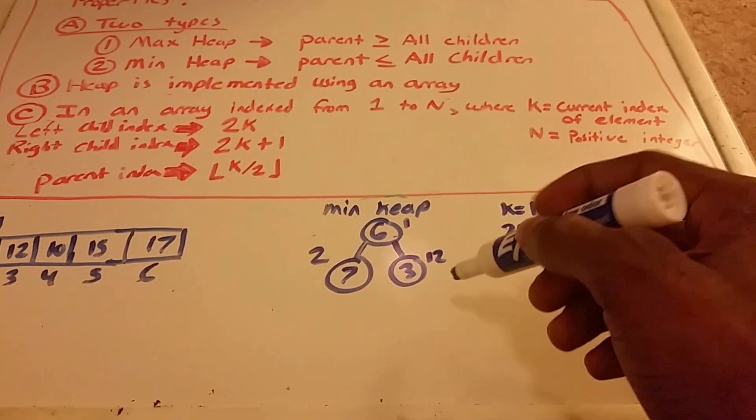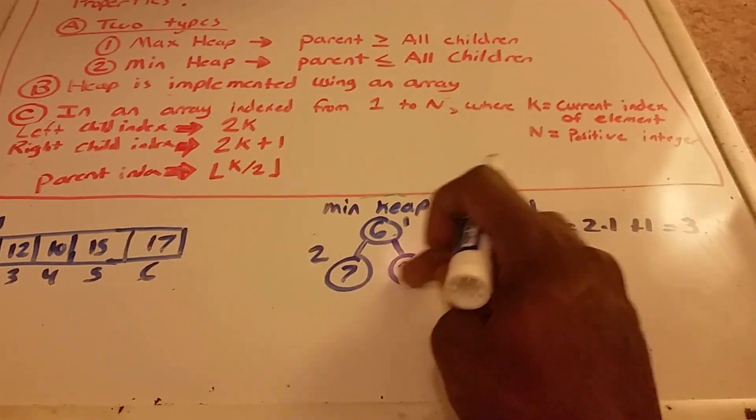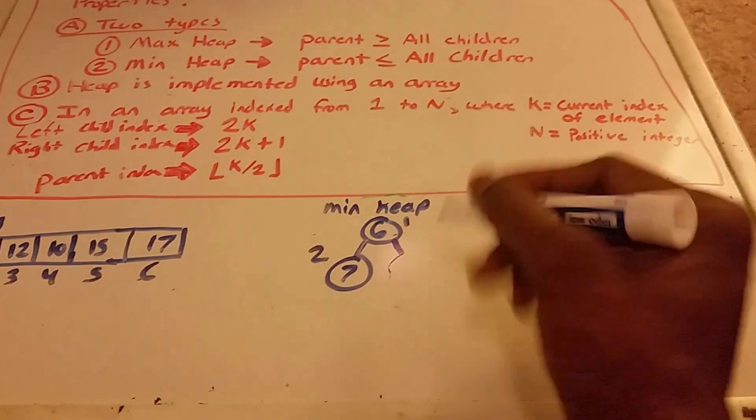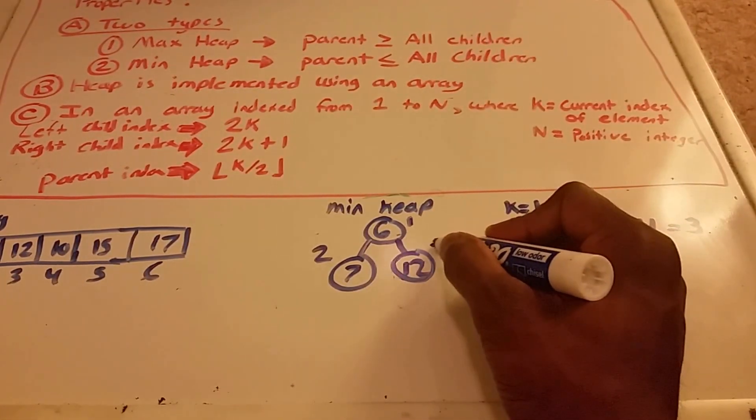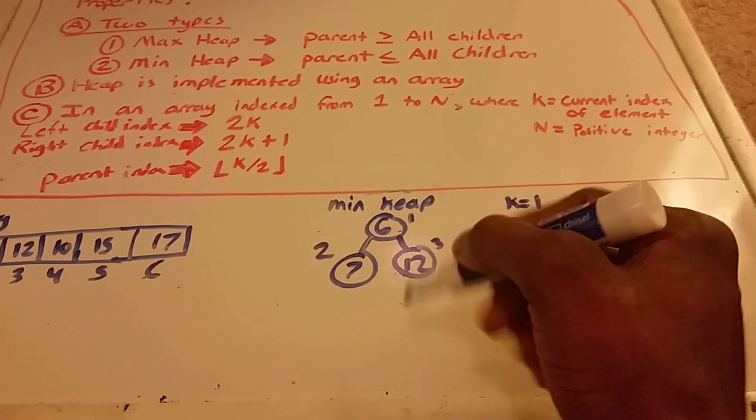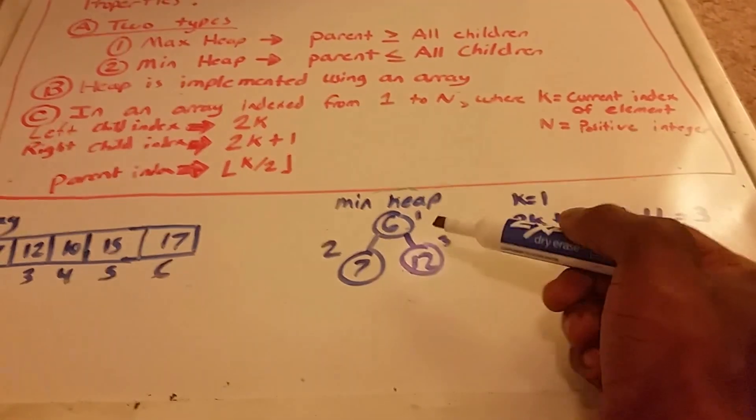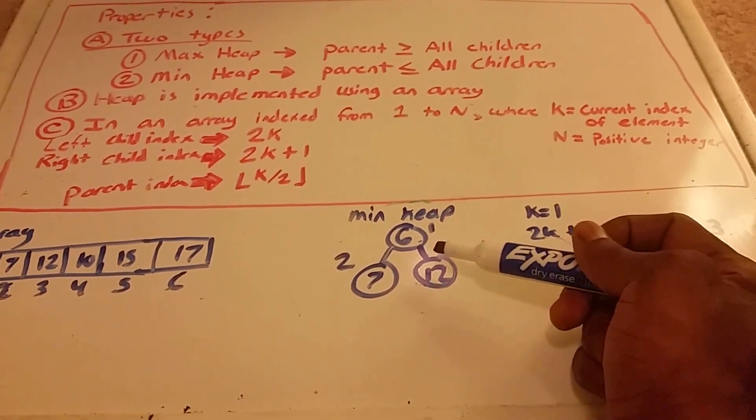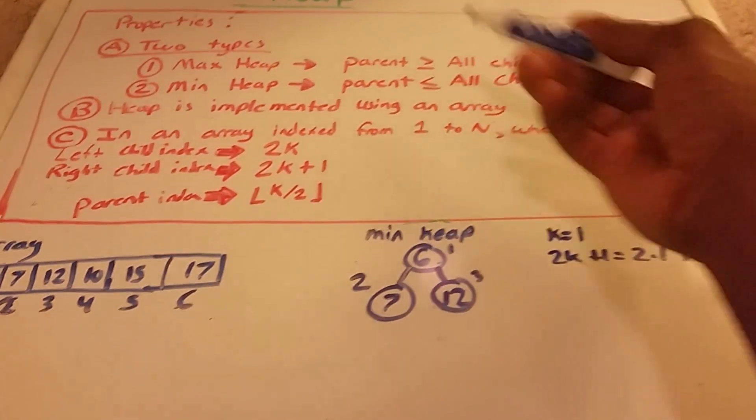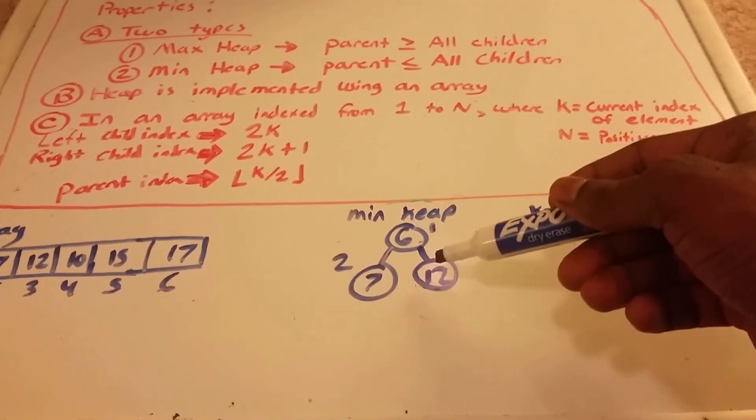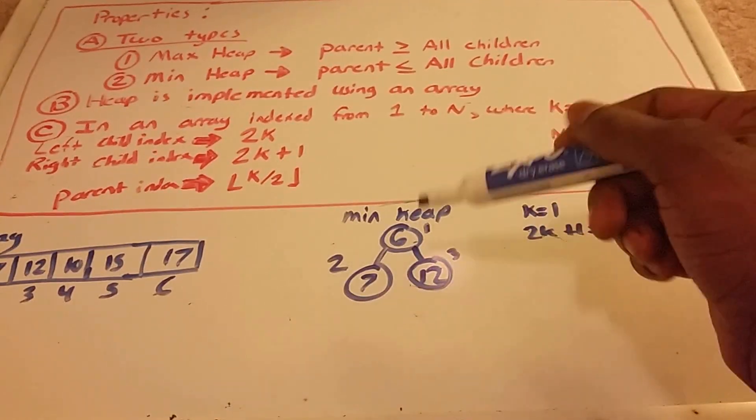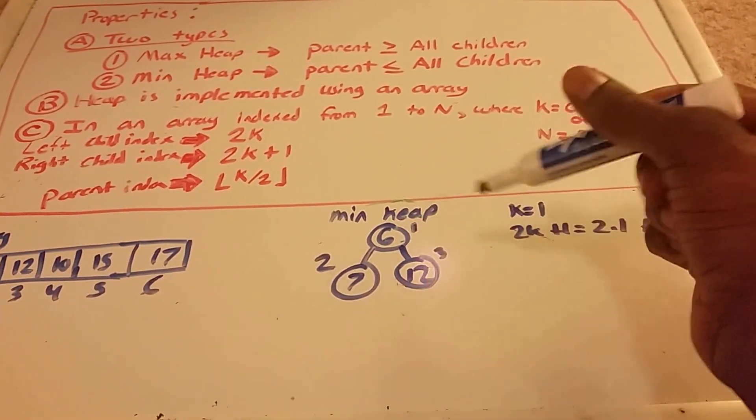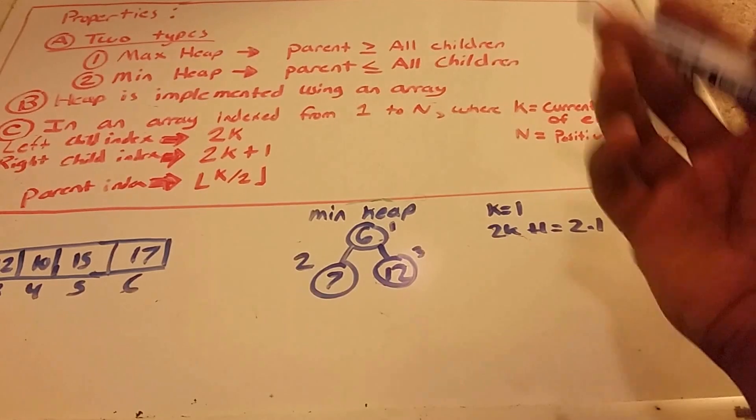And then we check. Oh, I messed that up. We go to index 3 and get the value 12. Does 12 meet this criteria? 12 is the child of the parent, and this child is greater than the parent. 12 is greater than 6, so it checks out.